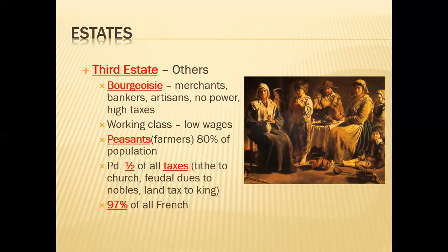The third estate is broken into two groups. We have the bourgeoisie, which is what we'd consider the middle class — the business owners, merchants, and bankers. They pay high taxes. Then there's the working class and peasants: farmers making up about 80% of the population, while the bourgeoisie is about 17%. The peasants and everyone in this third estate pay basically all the taxes — everything is on their shoulders to support and keep France going. Without these people, there is no France.